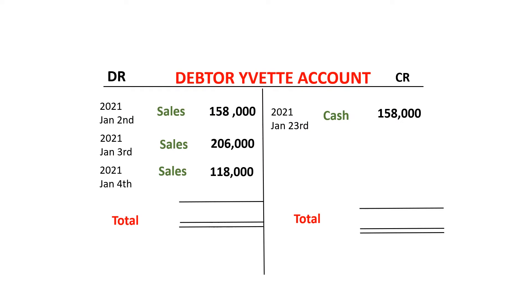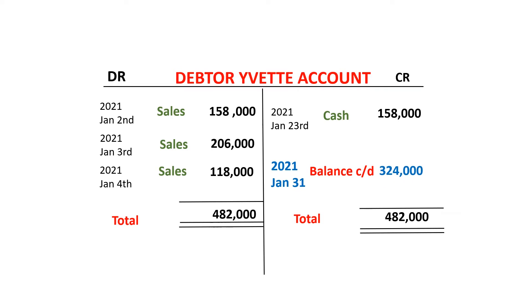If you look at your screen, you can see a ledger account we've called Data Yvette. Looking at this ledger account, we can see that on the debit side it has certain values, and on the credit side it has certain values. From looking at this, you can see that the debit side is bigger than the credit side. It is 482,000. So we say this account has a debit balance.